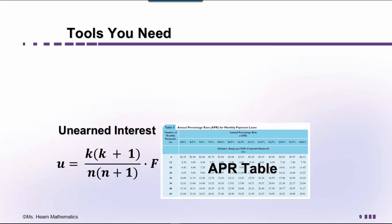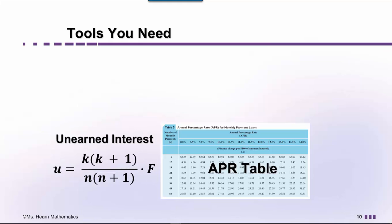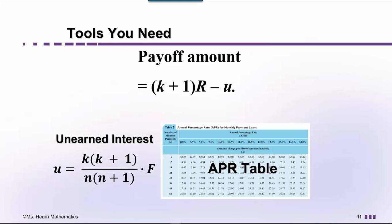This is the unearned interest formula based on the rule of 78. With the APR table and this formula, you can find out how much interest is saved by paying off early. The third tool is to calculate the actual amount that you have to pay in that last payment in order to close out your account, and that's (K plus 1) times R minus U. We'll discuss the meaning of N, K, U, F, and R as we explain how to use these formulas.